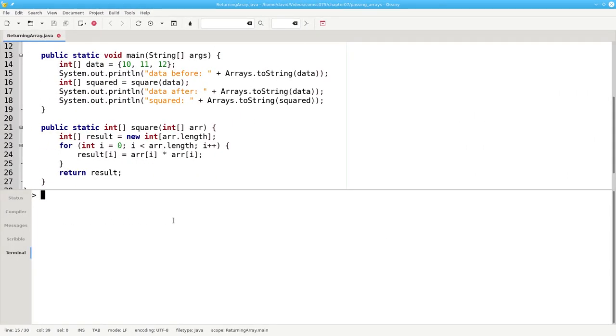Here's the code. Let's run this program. And we'll see that the data array is the same before and after. And we have a brand new array, squared, that has the results we want.